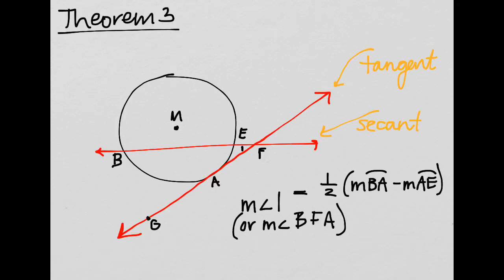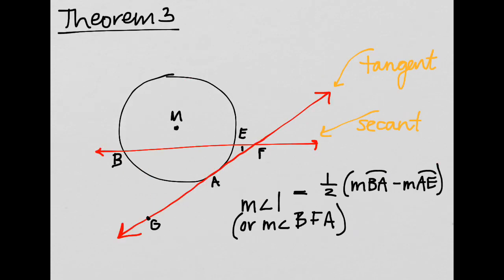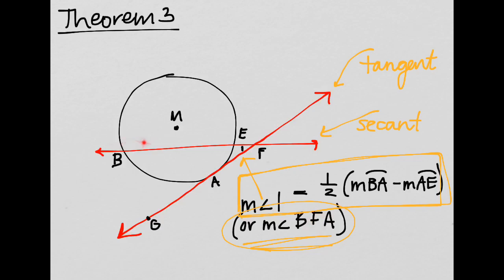Let's try the third theorem — pause it, I know I'm going quickly. What happens if we have not two secants but a secant and a tangent? A secant and a tangent will always intersect on the exterior — there's no way a tangent, which doesn't go inside the circle, can have its intersection inside the circle. So we follow the same rule as our last one: if it's outside the circle, whether it's two secants or a tangent and a secant, you're going to subtract. The angle can be named with letters like BFA — the middle letter F is the vertex.